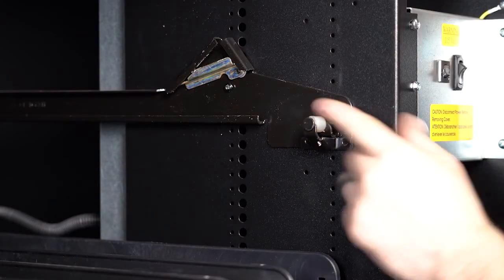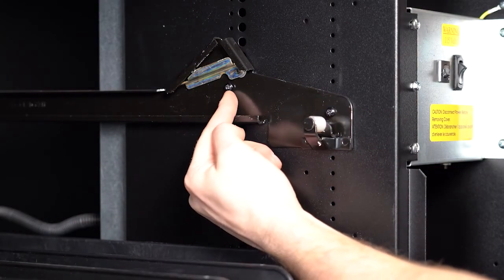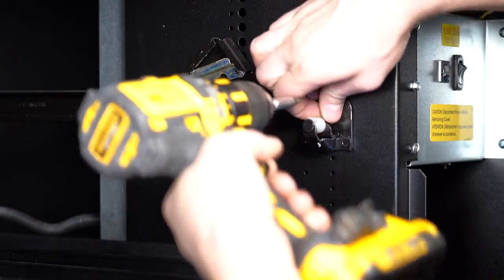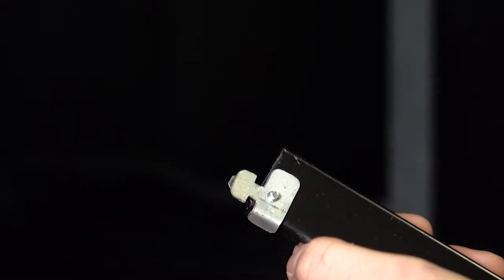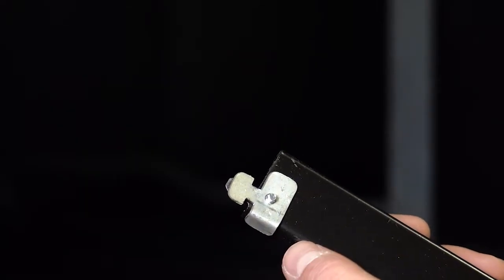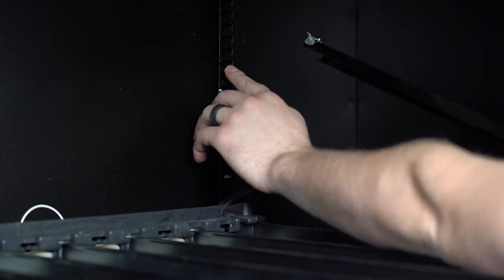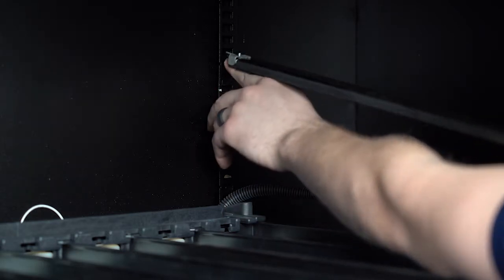To move the rail on the right side, start by taking out these two screws in the front. Then remove the rail by unhooking the latch in the back. Move the rail the same amount the left one was moved, and then secure the rail into its new position.